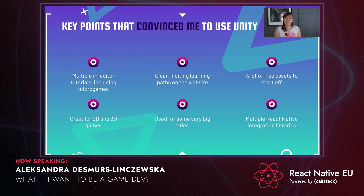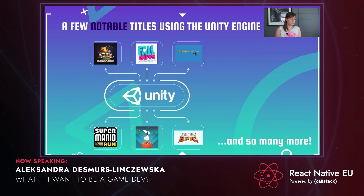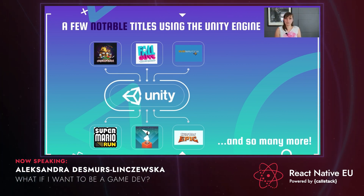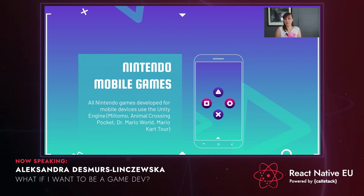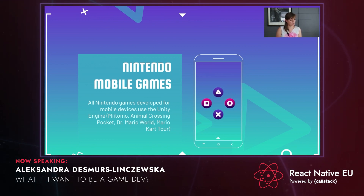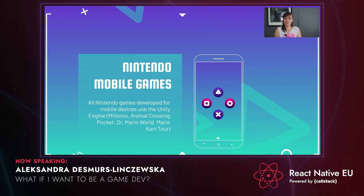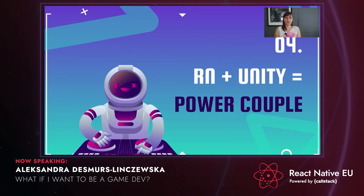Here are a few notable titles that use the Unity engine: Overcooked 2, Fall Guys, and Subnautica. As far as mobile games are concerned, Unity is used for Super Mario Run, Monument Valley, Angry Birds Epic, and many more. Nintendo actually uses the Unity game engine for all of their mobile games, including Animal Crossing Pocket, Dr. Mario World, and Mario Kart Tour. So now I hope I've convinced you that Unity is great. The last piece of the puzzle is talking about the marriage of React Native and Unity — I believe they create quite the power couple.